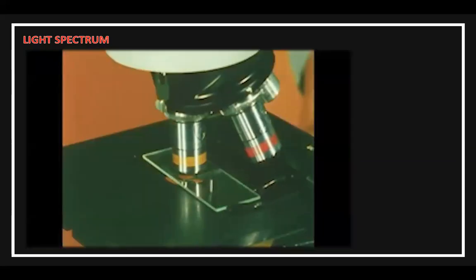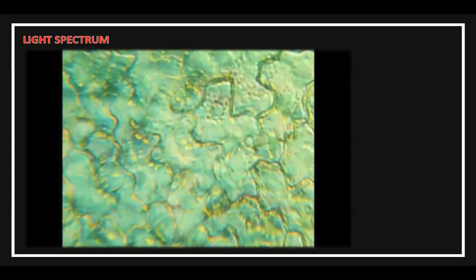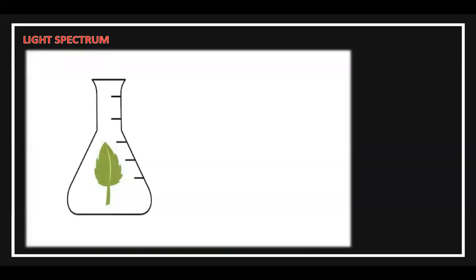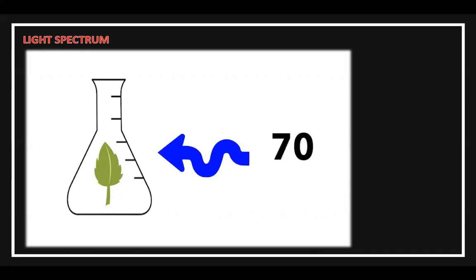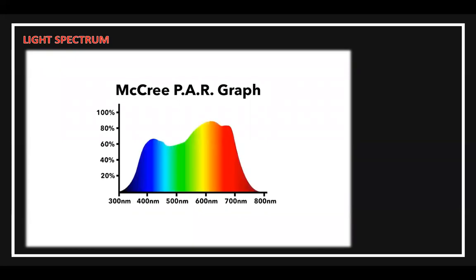When Dr. McCree did this study, he limited his variables like a good scientist. He set up his experiment to test each color individually by taking a single leaf, putting it into a test chamber, and exposing it to one color at a time at low intensity. Then he measured the rate of photosynthesis and repeated this for each color. The PAR graph can be misleading because it shows all of these individual results at the same time. In the real world, plants are exposed to all colors of light at once.